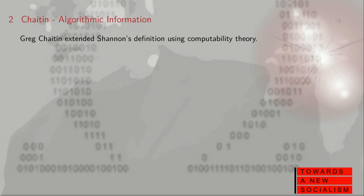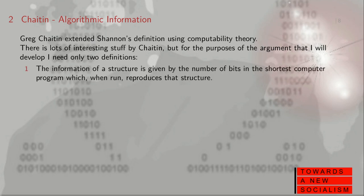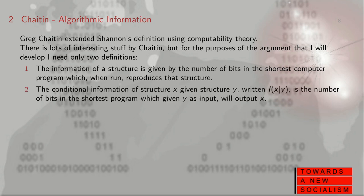Greg Chaitin then extended Shannon's definition using computability theory. For the purposes of the argument I'm developing, I only need two definitions. First, that the information of a structure is given by the number of bits in the shortest computer program which reproduces that structure. And the conditional information of a structure X given structure Y, written as I(X|Y), is the number of bits in the shortest program which, if given Y, would output X.